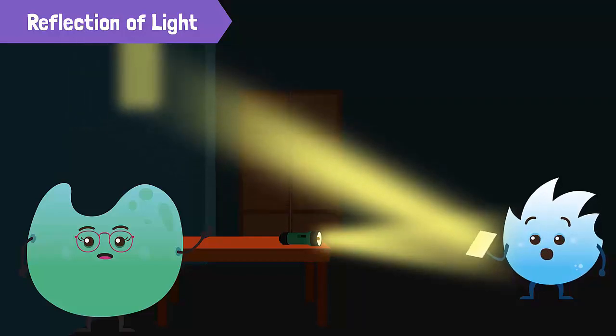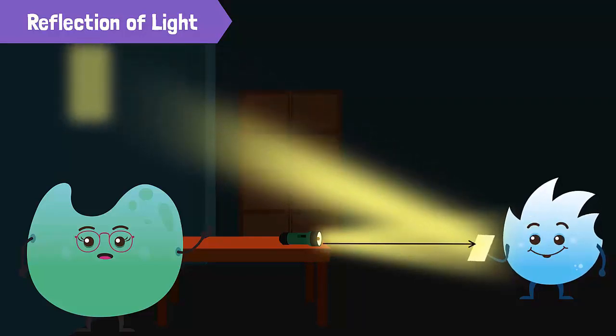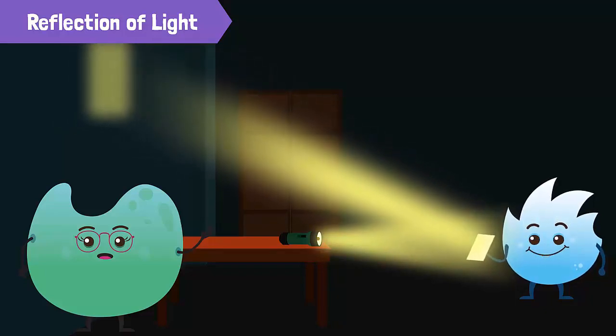The light of the torch falls onto the mirror and bounces back. As a result, we see the reflection of this light on the wall.